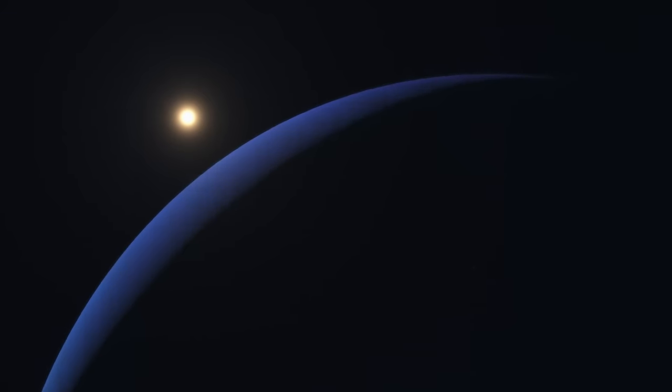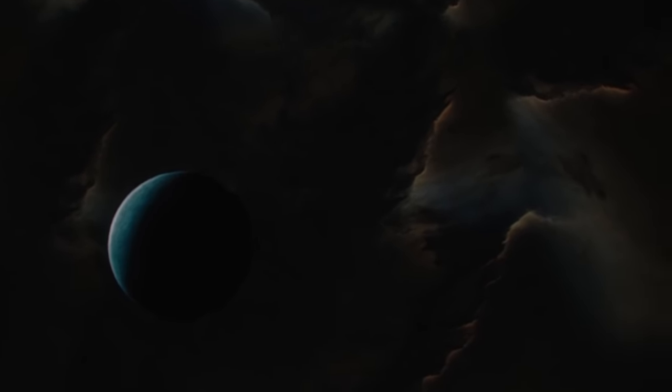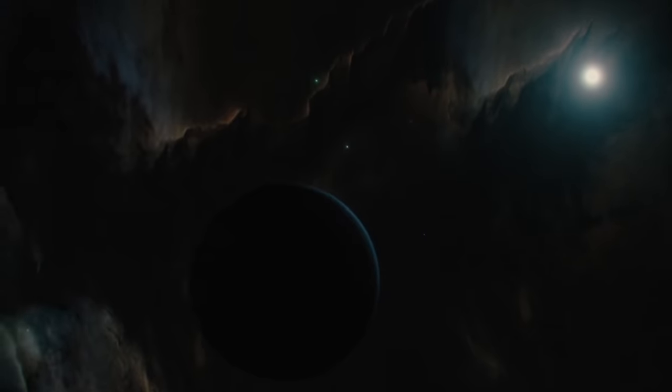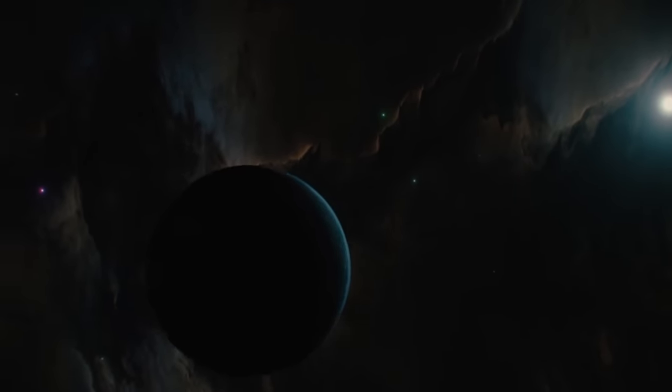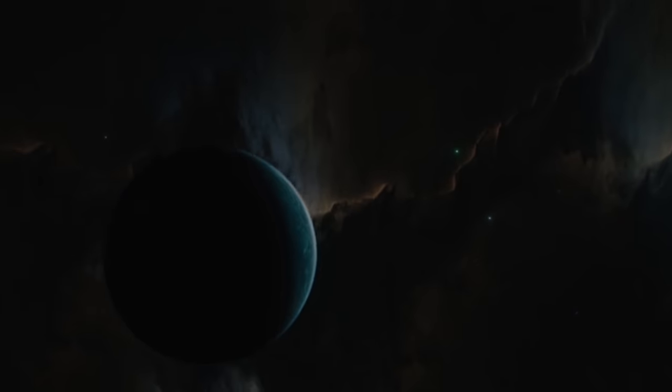But while Neptune orbits our Sun at about 30 astronomical units, planet 9 is expected to be much further away. Because of the great distances and how dim planet 9 is, our chances aren't that high.